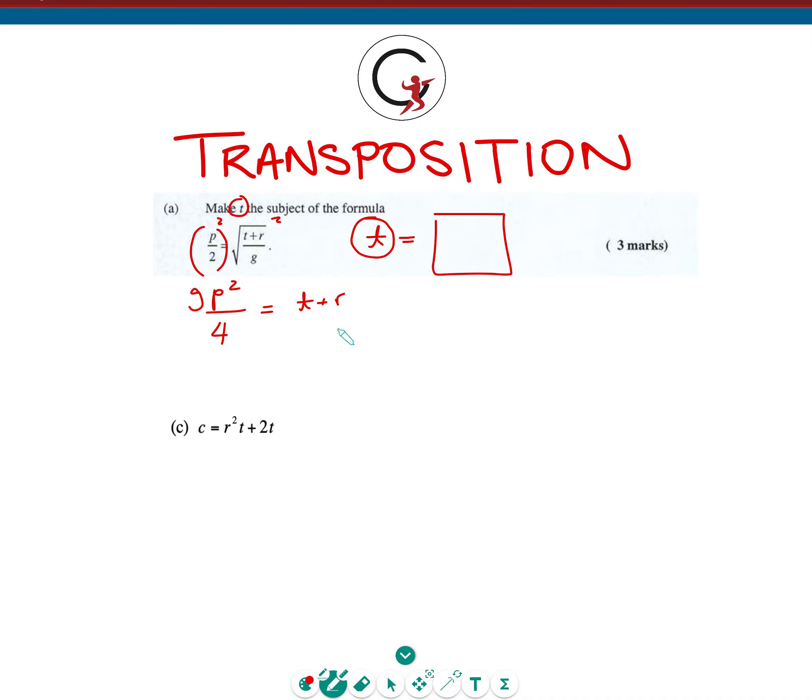The way we do that is by doing the opposite. So the opposite of plus R is subtract R. We're going to subtract R from both sides, leaving G P squared over 4 minus R is equal to T.